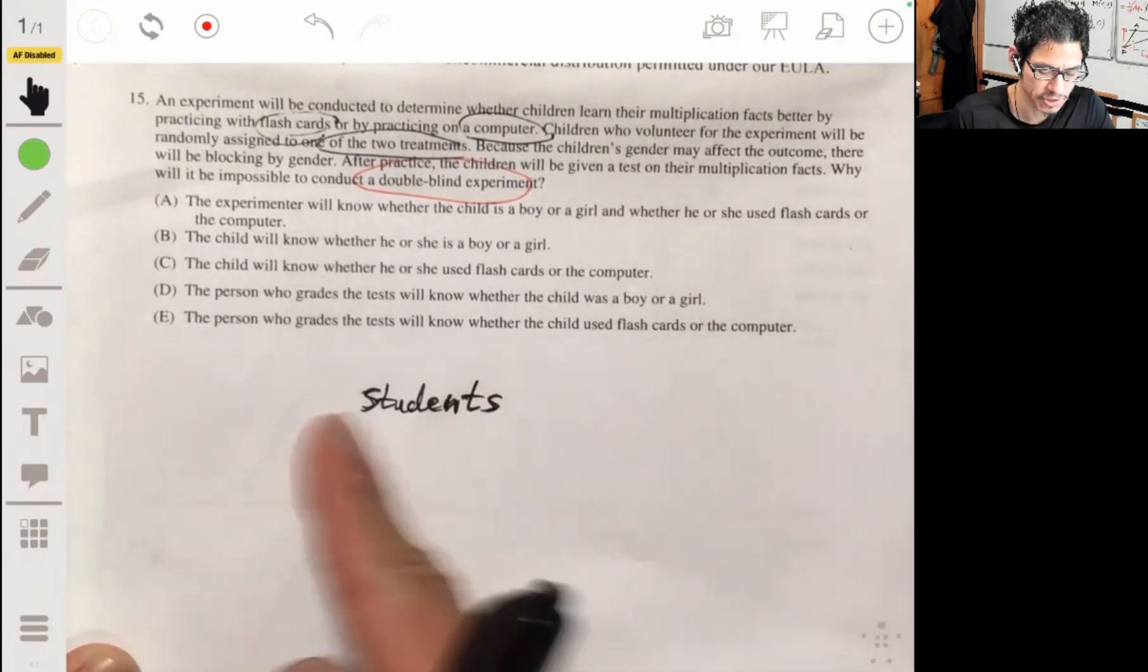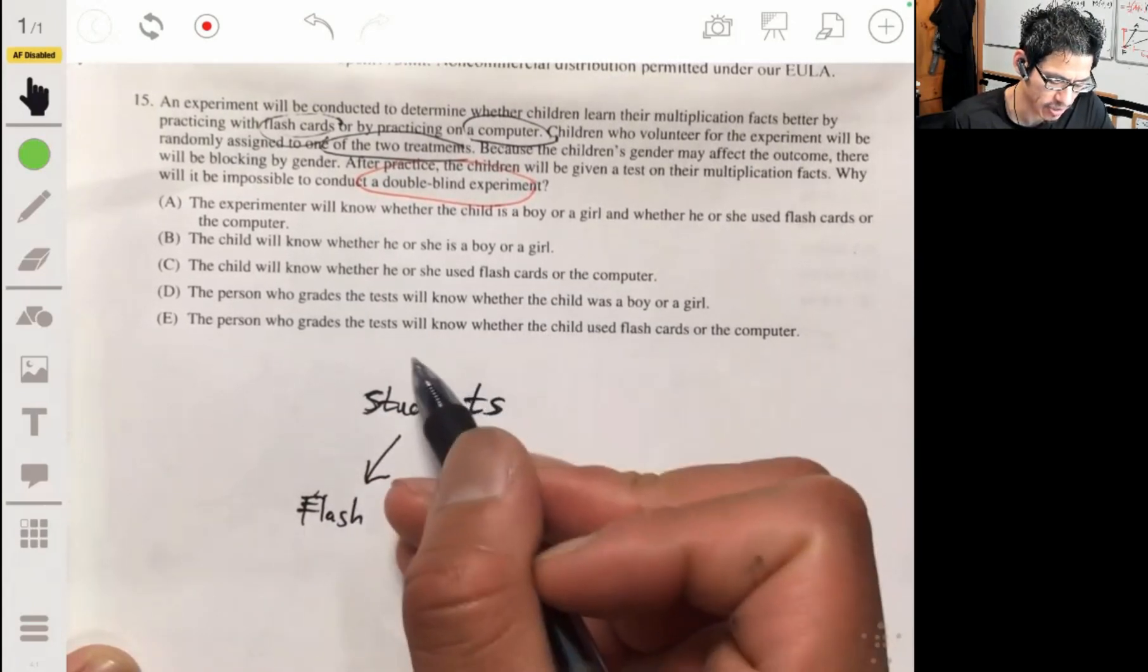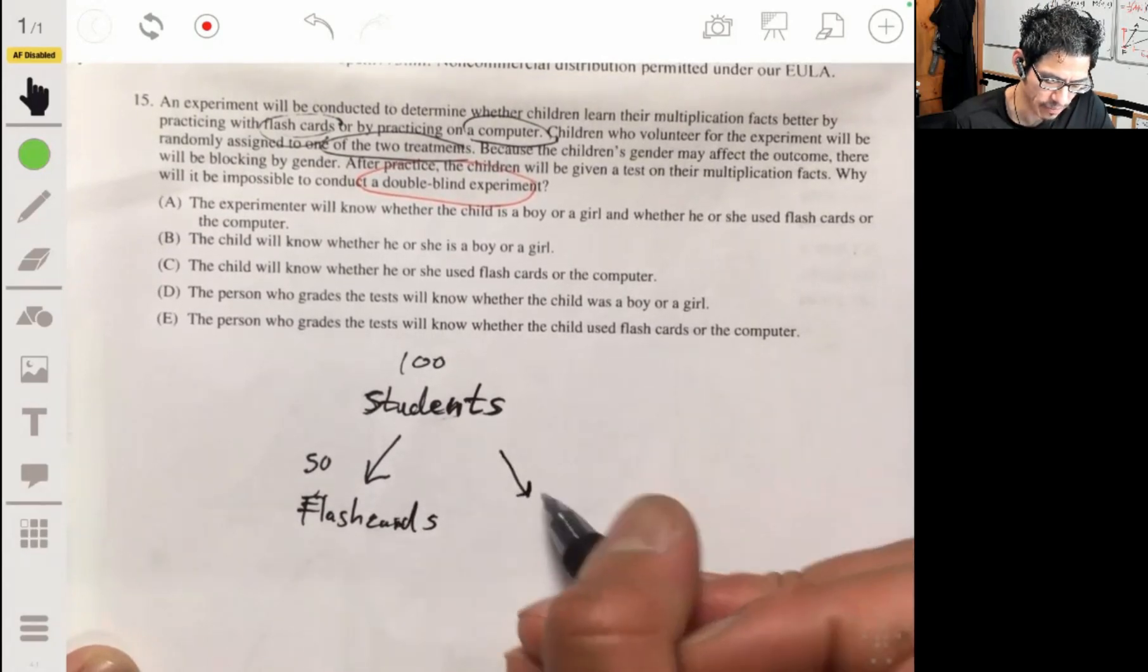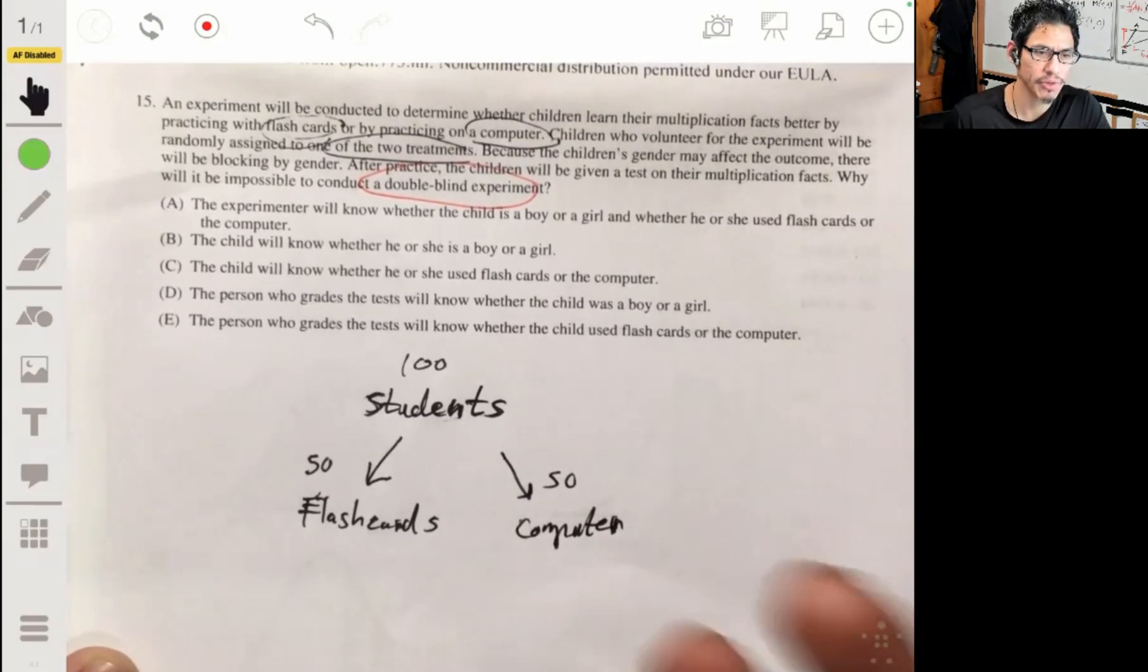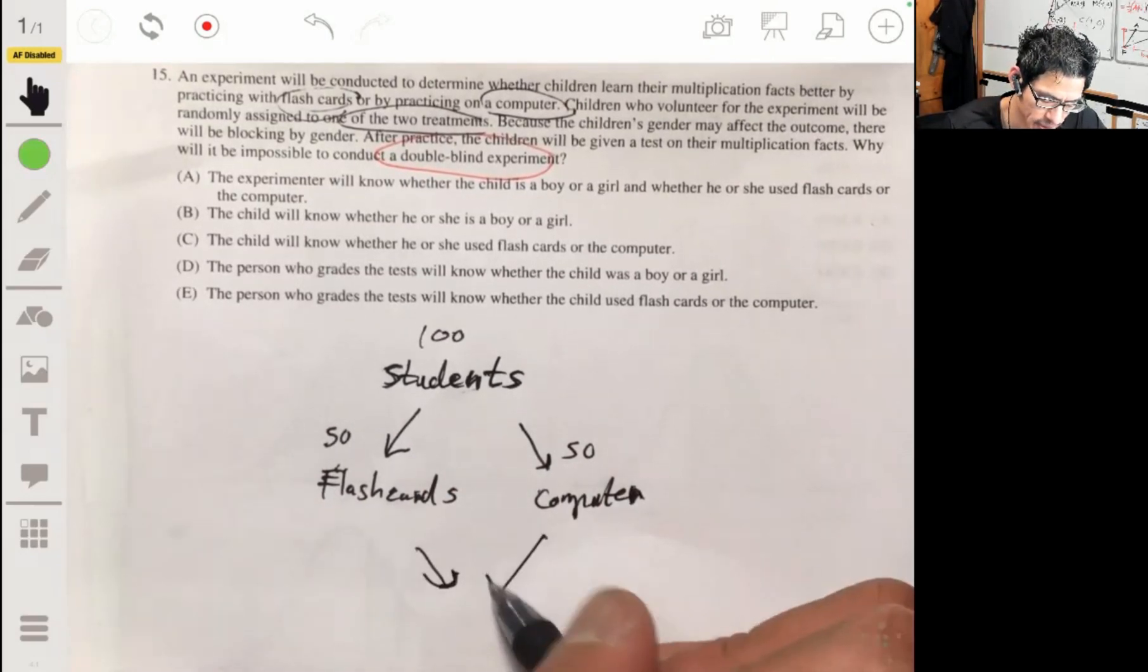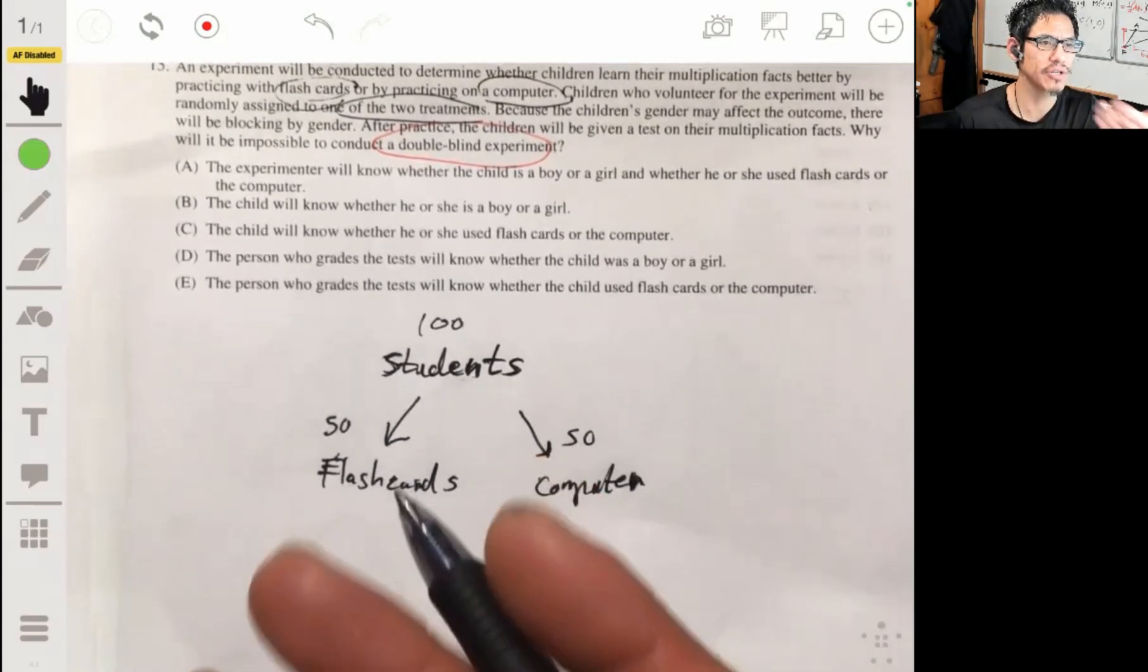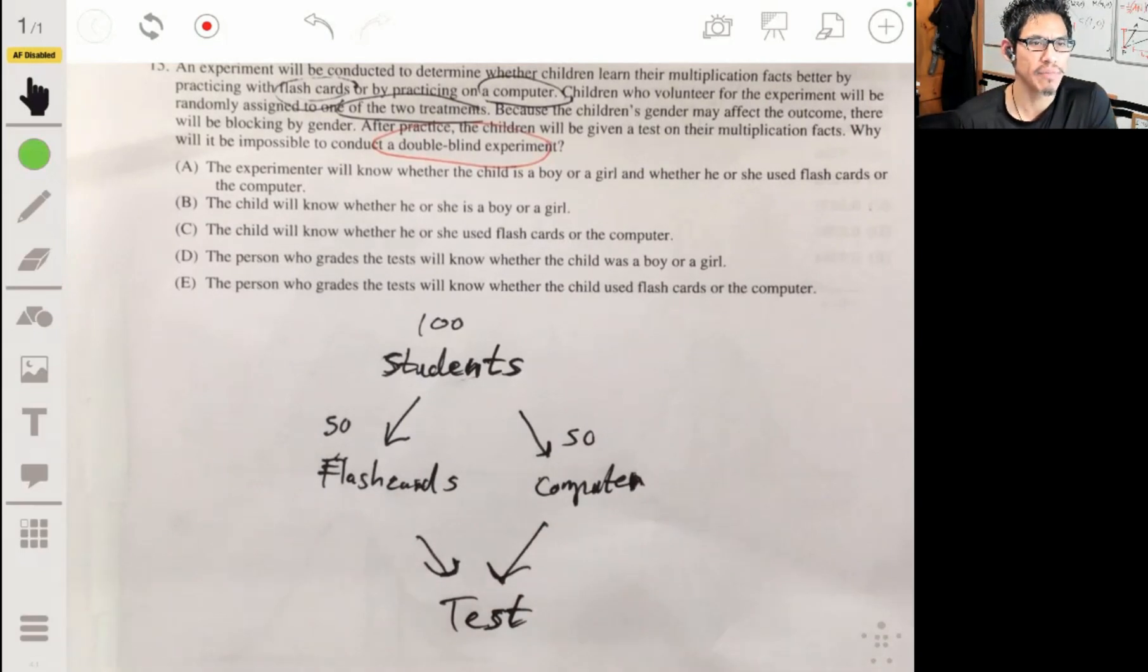So you have all these students, you have boys and girls. And in one group, you're going to have, let's just say you have like 100 students or something. You're going to have maybe like 50 of them go to the flashcards group. And the other 50 of them go to the computer group, where they're practicing by computer. Then after they do their practice, they both take the same test. All the kids in each group are going to take the same test, and then they're going to measure how good they do. And then from there, they're going to be like, okay, looks like flashcards or computer did better. And they're mixing boys and girls.